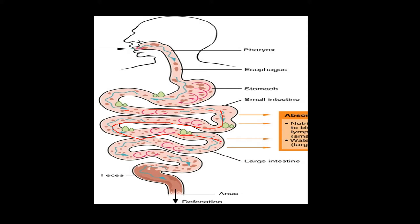In case there is an obstruction to this flow — either a partial obstruction in the small intestine or a complete obstruction — the area just above the blockage accumulates food particles, digested contents, and gases, as they are not able to pass through to the other side.